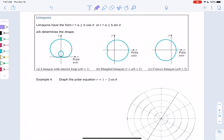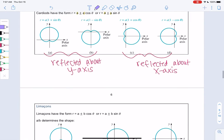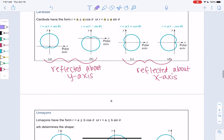Section 8.2, example 4. We're going to define a new shape before we get started. So just like last time we saw cardioids, they had the form A plus or minus A times cosine or sine.